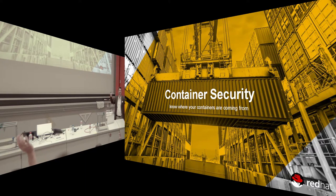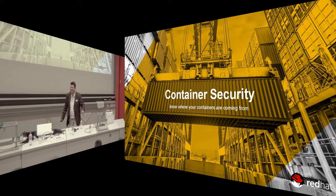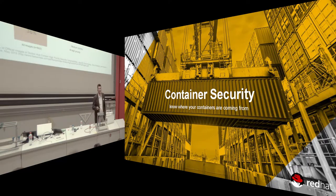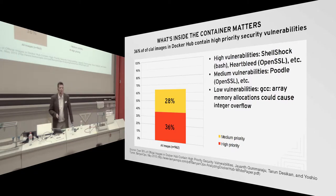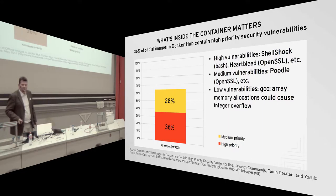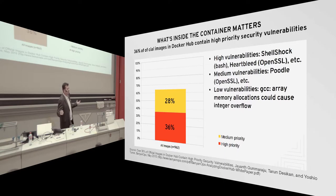A very important thing is security, because life comes too easy with containers. They made an investigation on Docker Hub and found that about 60% of containers don't even have the Shellshock or Heartbleed patches implemented.